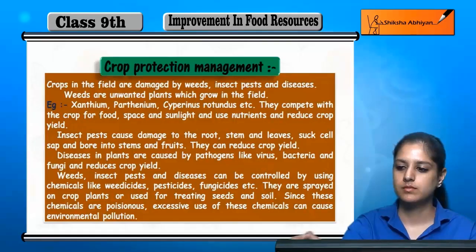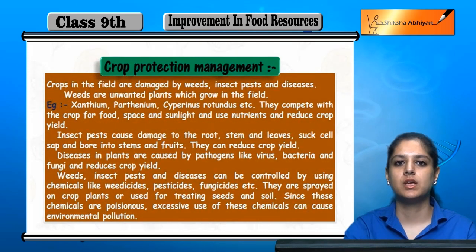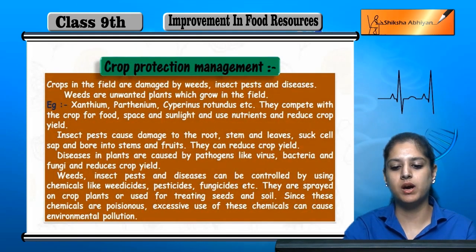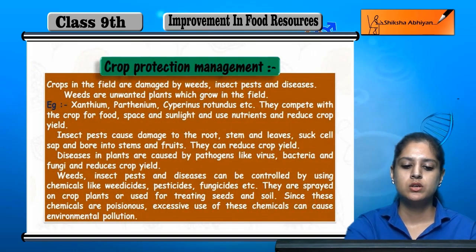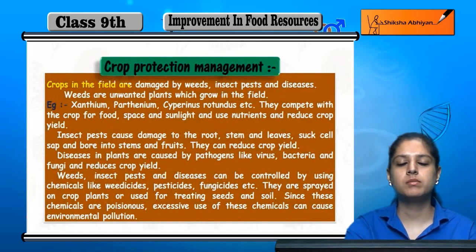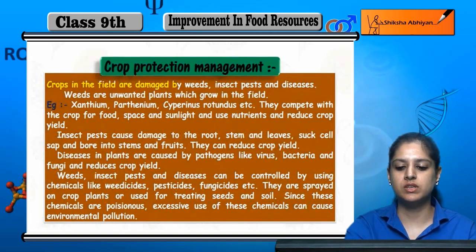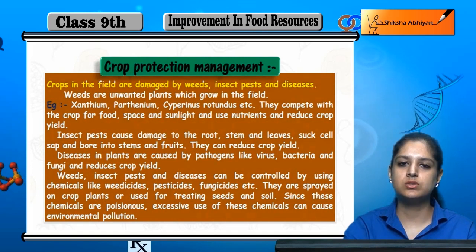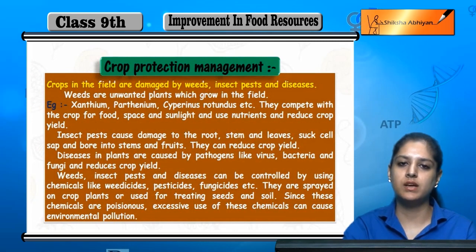The third step to improve the crops is crop production management. Crops variety and production improve after managing and protecting crops in the field. There can be many damages, and the reasons for damage are weeds, insects, pests and diseases. There are different diseases, pests and weeds because we have crops — and they can be poor.